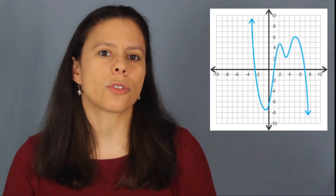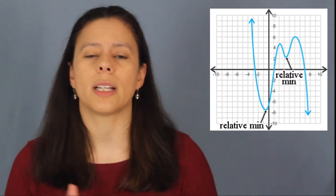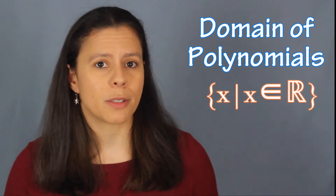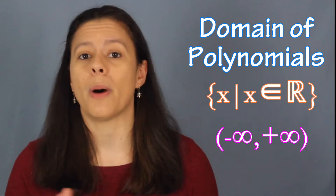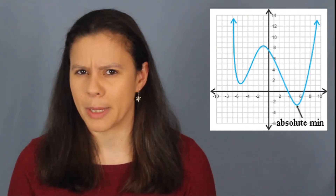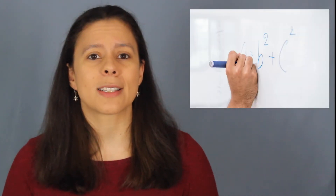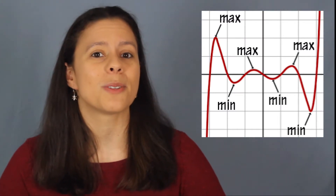Sometimes polynomials are going to have only relative minimums or relative maximums, or they will only have absolute minimums or absolute maximums. I must point out that because the domain of all polynomials is all the real numbers, meaning they go from negative infinity to positive infinity, you can never have both an absolute maximum and an absolute minimum — because that just wouldn't make any sense. Now, finding these points by hand is becoming a thing of the past, so in this video I will show you how to find the maximums and minimums using one of my favorite tools: Desmos.